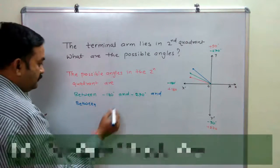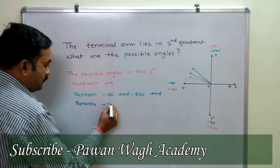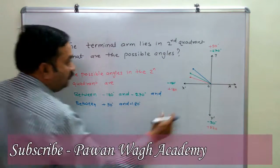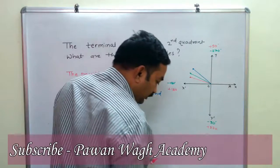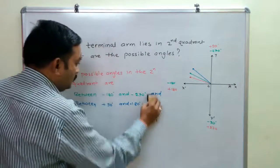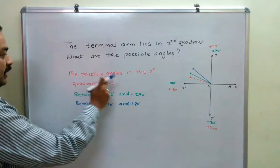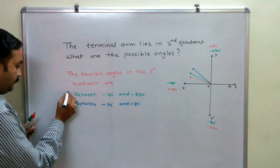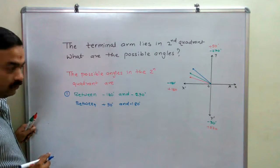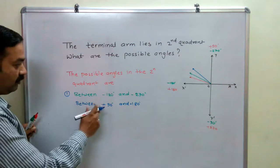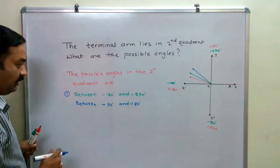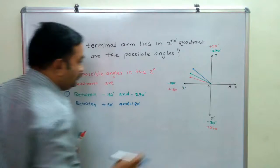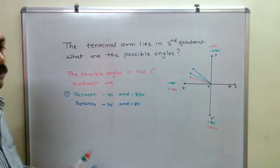So the possible angles in the second quadrant are: between positive 90 and positive 180 degrees, and between minus 180 and minus 270 degrees. In this way we can determine all possible angle values for a terminal arm in the second quadrant.